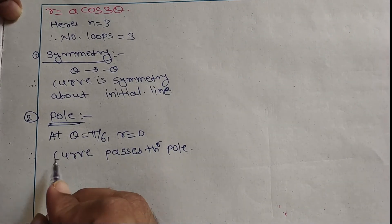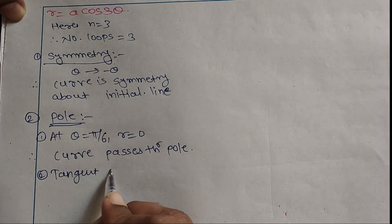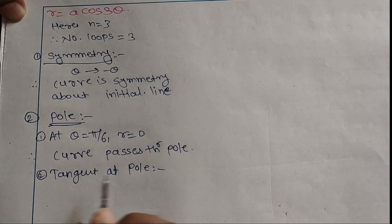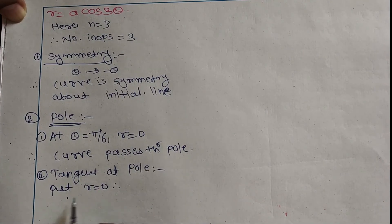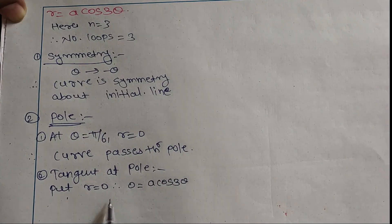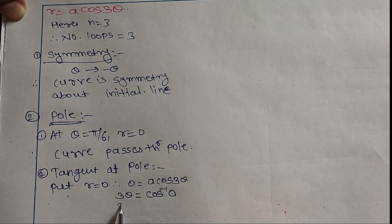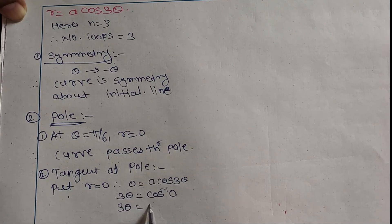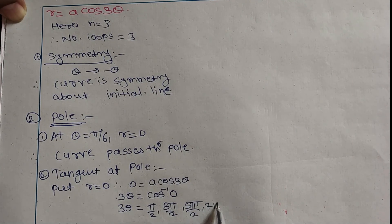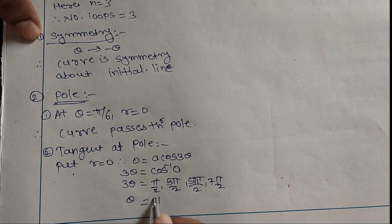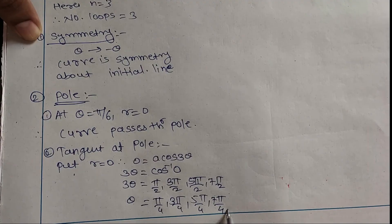Now we have to find the tangent at the pole. To find the tangent at the pole, substitute r = 0 in the given equation. We get 0 = a·cos(3θ), so 3θ = cos⁻¹(0). cos⁻¹(0) gives π/2, 3π/2, 5π/2, 7π/2, so θ = π/6, π/4, 3π/4, 5π/4, 7π/4.